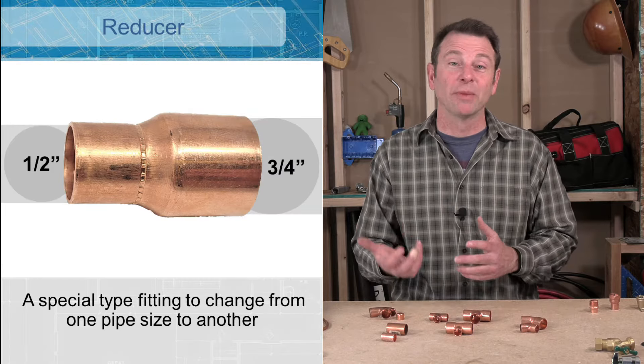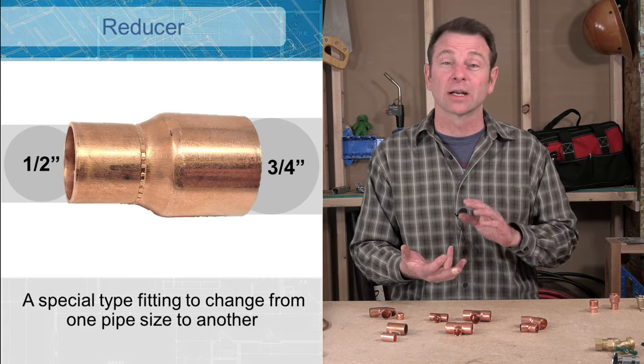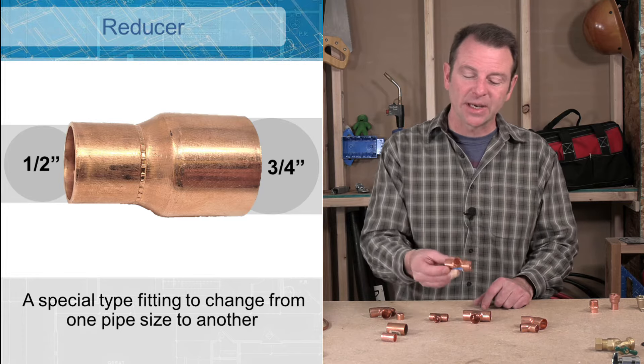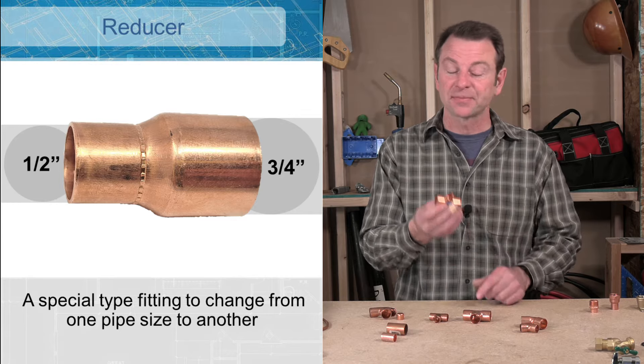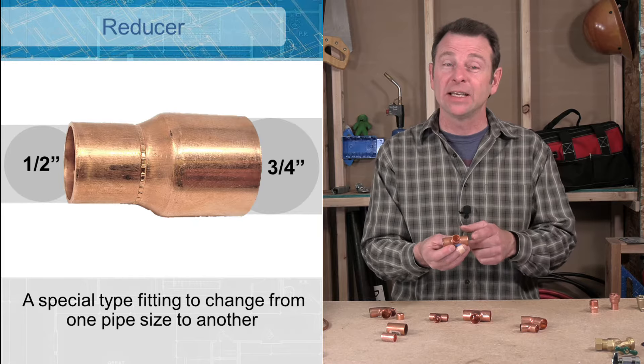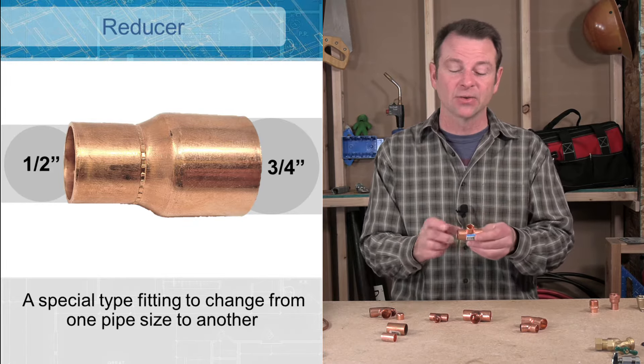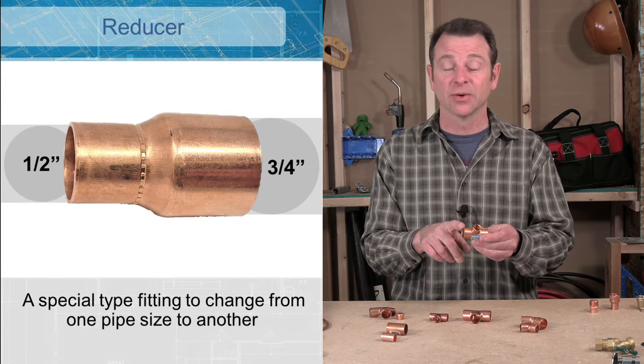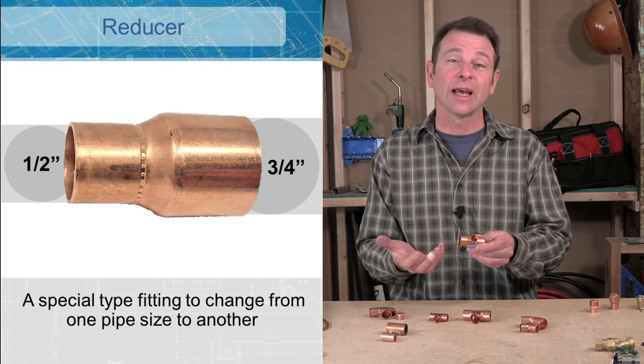A lot of times in plumbing, we're making transitions. We might be transitioning from size or a connection type. We talked about a T that goes from a half inch to a three quarter. A different type of fitting would be a reducer. And a reducer would not be in this T configuration. It would be more like a coupler. It would be a straight connection. You'd go from a half inch, say, to a three quarter. That would be a common thing to do. We call that a reducer.